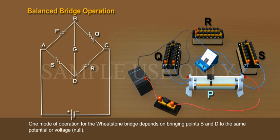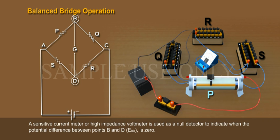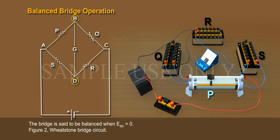One mode of operation for the Wheatstone Bridge depends on bringing points B and D to the same potential of voltage — null. A sensitive current meter, or high-impedance voltmeter, is used as a null detector to indicate when the potential difference between points B and D, EBD, is 0. The bridge is said to be balanced when EBD equals 0.